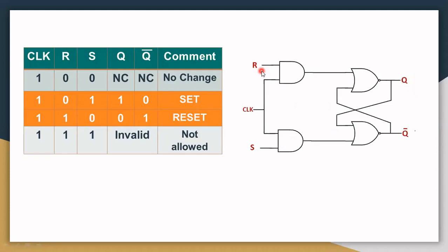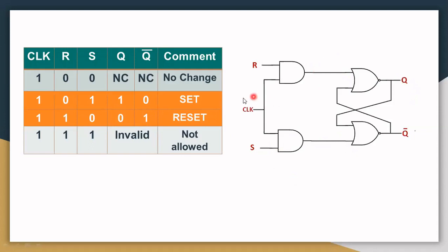Second state: when R is equal to one and S is equal to zero, and clock is high, the AND gate gives high output to the NOR gate. Since S is zero, the output of that AND gate is zero. So R is one and S is zero — that is the reset state, Q is equal to zero. The only difference from the SR flip-flop is that in the Clocked SR Flip-Flop, we give a clock pulse, so it changes state only when the clock pulse is high.